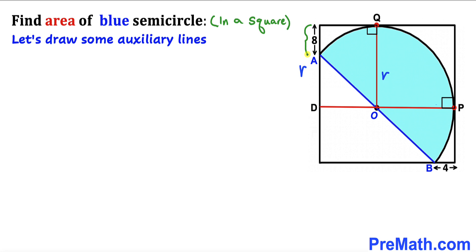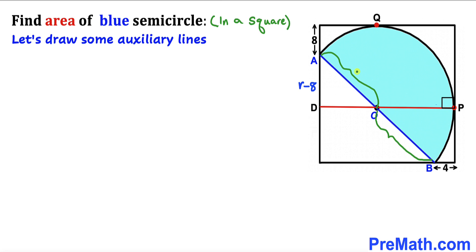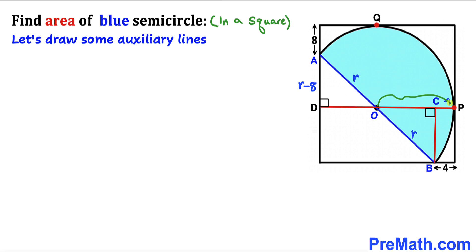We know that this tiny segment is eight units, so therefore segment AD is going to be r minus 8. We can see that these are both radii, so let me label them as lowercase r. I have also drawn this perpendicular BC, and we know that this tiny segment is 4 units, so therefore segment CP is going to be 4 units as well. Since OP is the radius, let me call it r, then segment OC is going to be r minus 4.